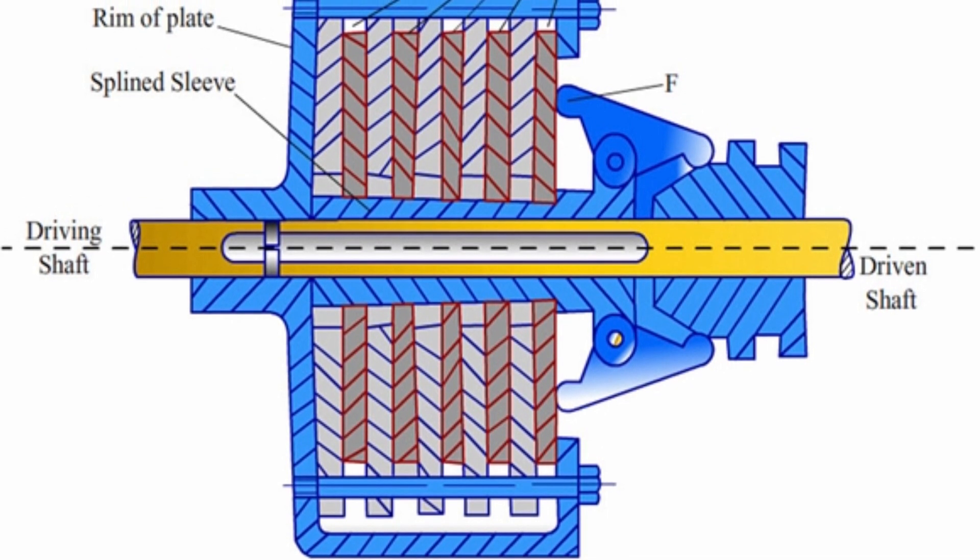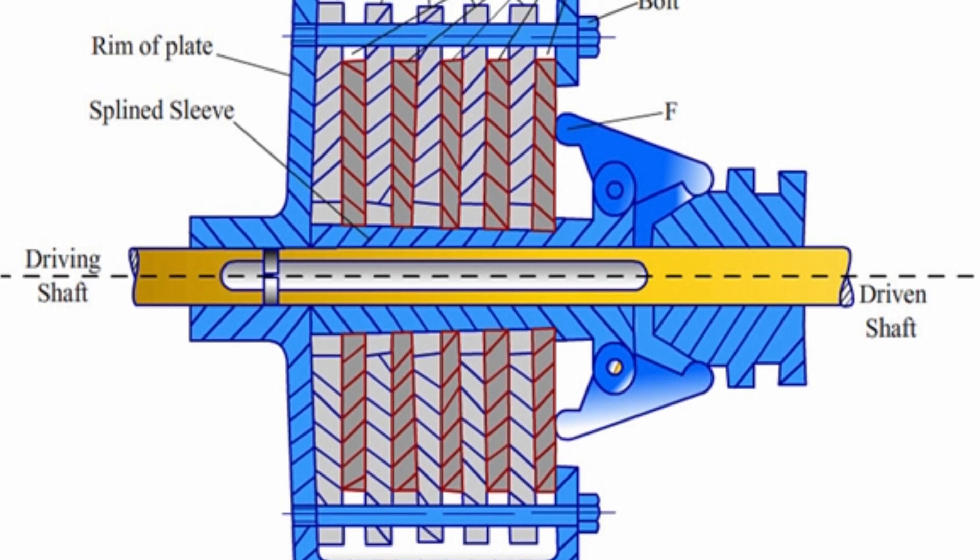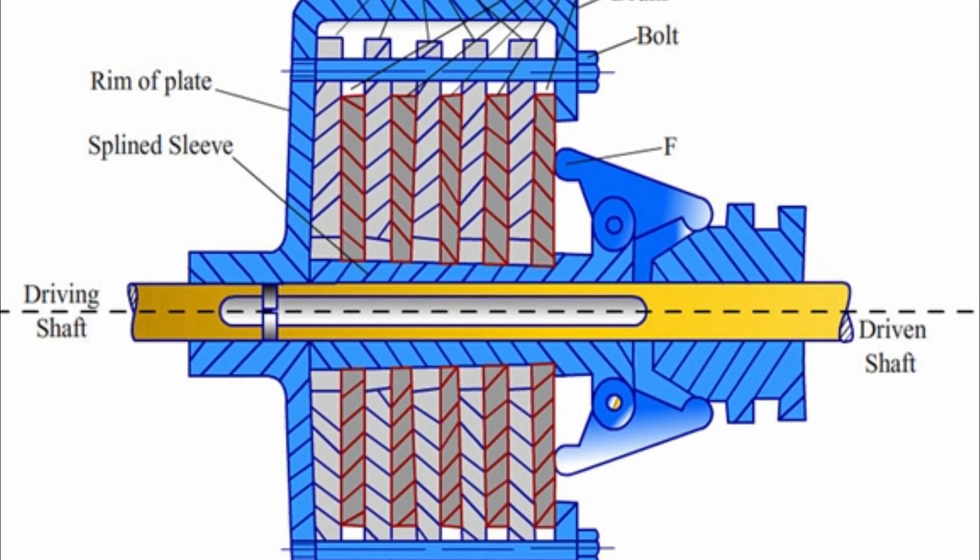When there is the engagement of the clutch, multiple plates of a multi-plate clutch provides more frictional force between the flywheel and the pressure plate as compared to single plate clutch, due to which the chances of slip is almost negligible in the multi-plate clutch.